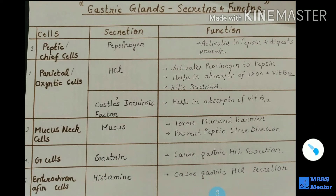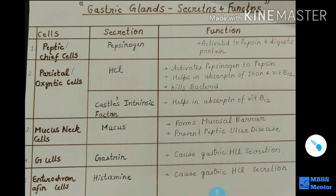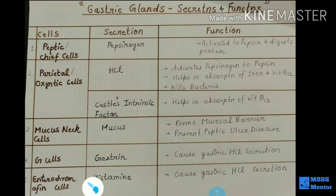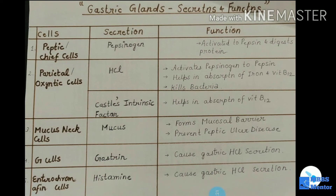Number four is the G cells, which are also located in the stomach. Their main function is the secretion of the hormone gastrin. Gastrin causes gastric HCL secretion. Number five is the enterochromaffin cells. Enterochromaffin cells secrete histamine. Histamine also causes gastric HCL secretion.